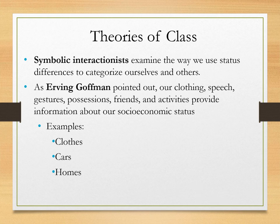Symbolic interactionists examine the ways that we use status differences to categorize ourselves and others. As Goffman pointed out, our clothing, speech, gestures, possessions, friends, and activities all provide information about our socioeconomic status. When you look at a person's clothes, the cars they drive, or the home they live in, you can see a tremendous amount about their social status and position in the class hierarchy — some of it obvious, some of it less so.